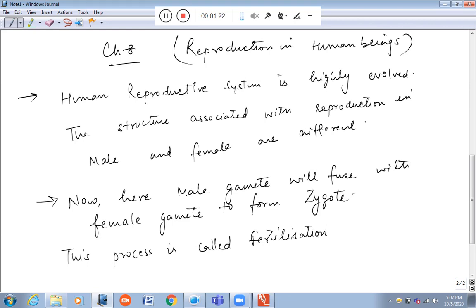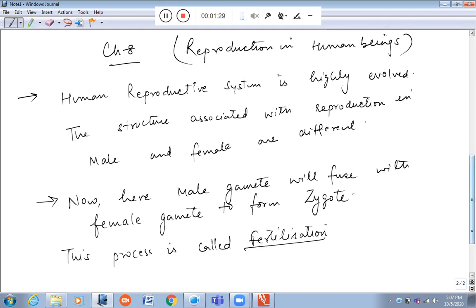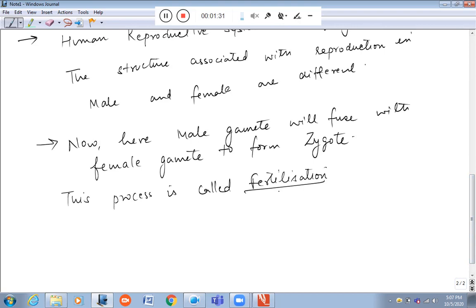Whenever fertilization occurs in plants or animals, there is fusion of gametes. Fertilization in animals, not particularly about human beings, but in animals generally.